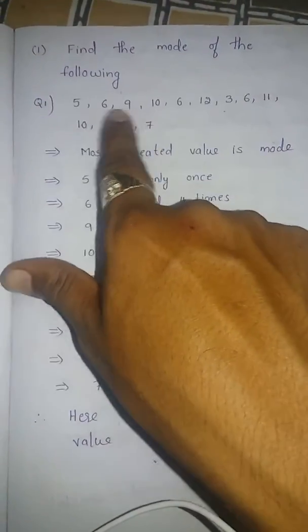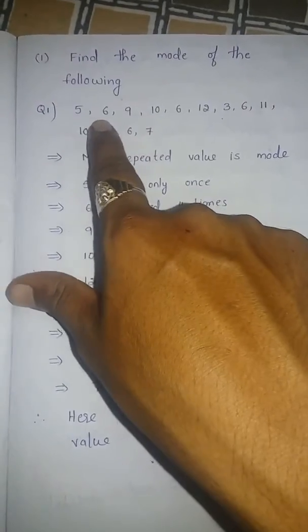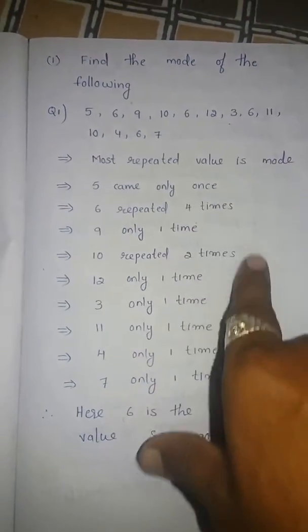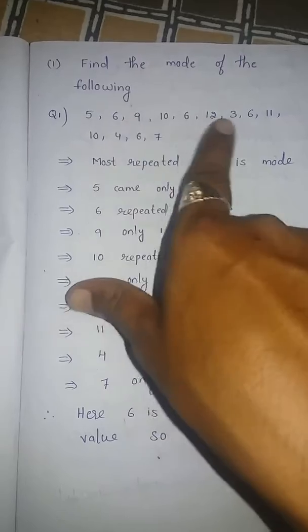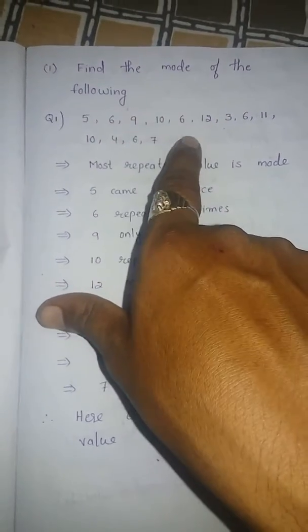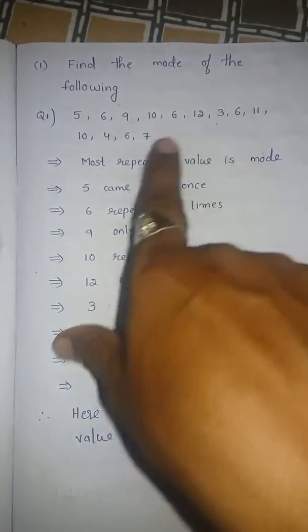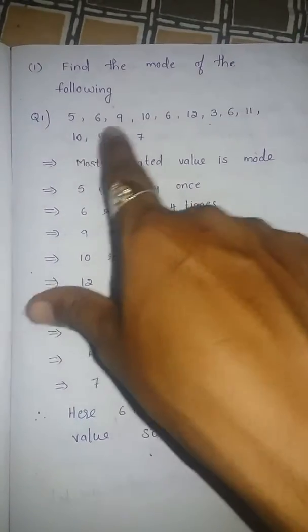In the given observations, these are all repeated very less number of times, but 6 is repeated 4 times. Here 6 appears one time, two times, three times, four times. So 6 is the most repeated value.